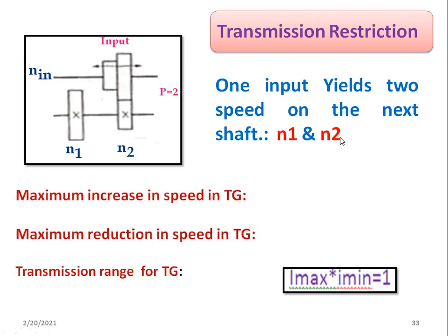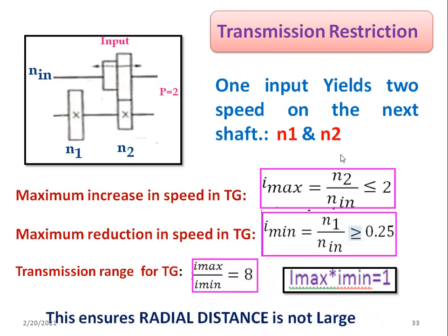The maximum increase in speed in the transmission gearbox is indicated by I_max, which equals n2 divided by n_input, and this must be less than or equal to 2. This means you can at most double the speed. For example, if the input shaft speed is 100 RPM, the maximum you can achieve is 200 RPM. That is why I_max = n2 / n_input ≤ 2.